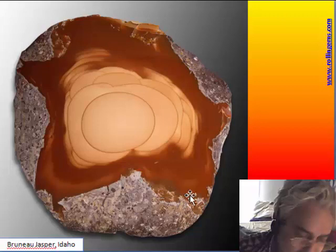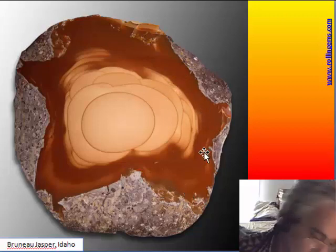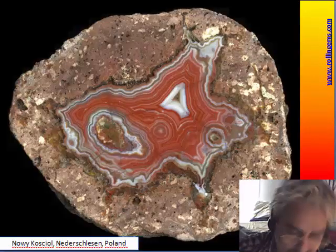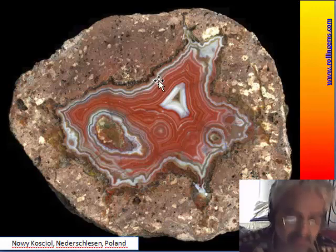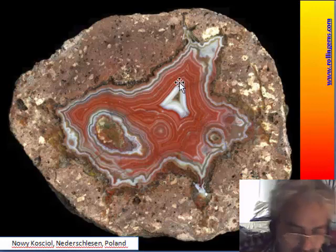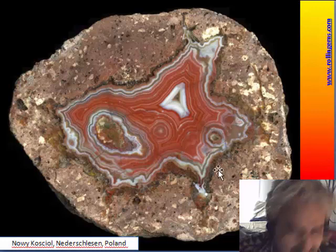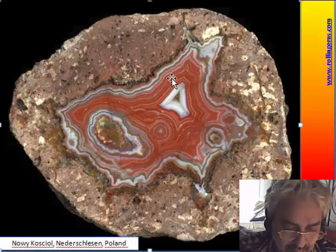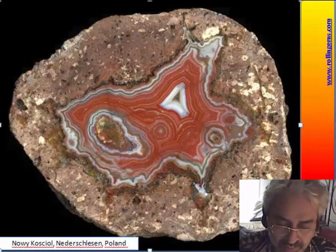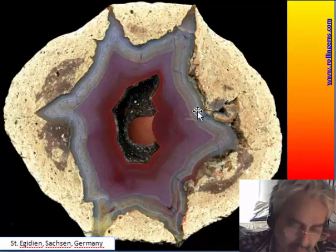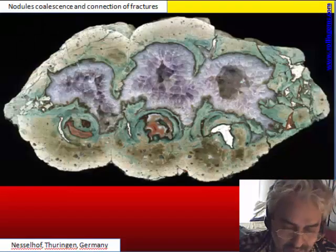This is also a very beautiful Bruno nodule. This is a very famous novaculite thunder egg from Poland with fine banding, and also in this case it is quite difficult to realize the spherulitic composition — typical of deposits where there is a lot of phenocrysts in the tuff. Another thunder egg from Germany.